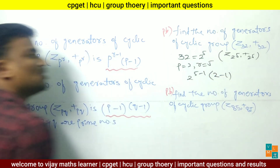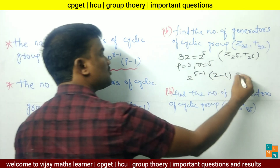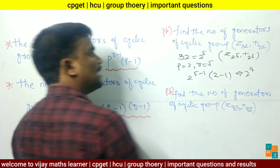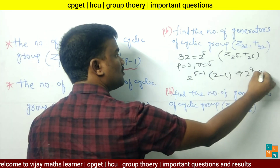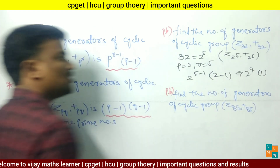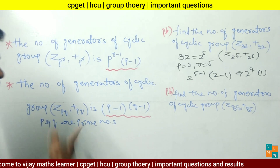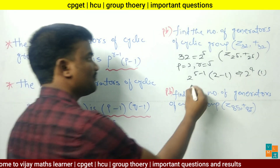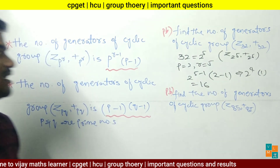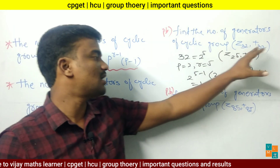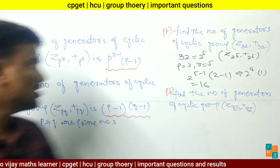So we compute 2^(5-1) = 2^4, and 2 minus 1 = 1. Therefore 2^4 = 16, and 16 into 1 equals 16. The number of generators of cyclic group Z32 with addition modulo 32 is 16.